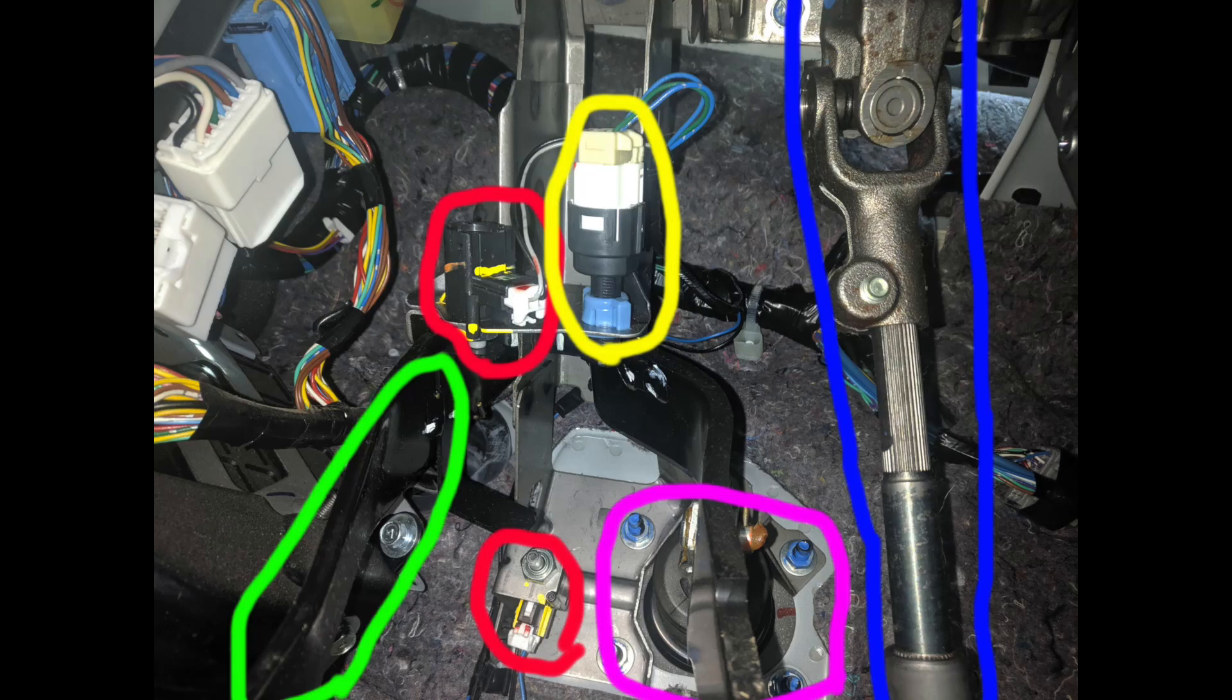Then in yellow we have the stoplight switch, which is what we're discussing today, and then in purple is the master cylinder that goes through the firewall and is essentially the cylinder that holds all the brake fluid. Then in blue is the steering coil.